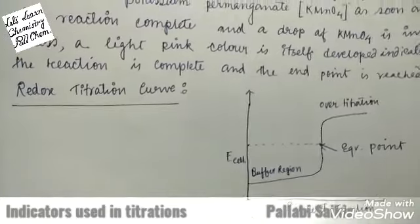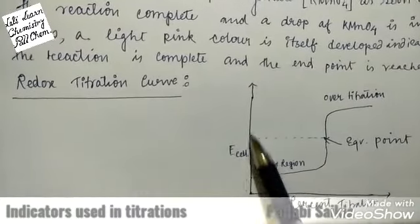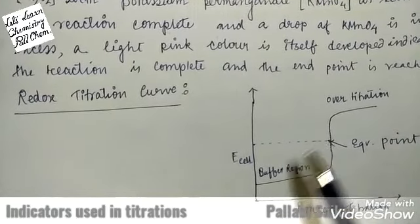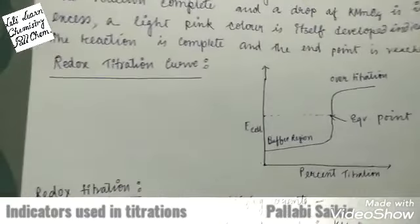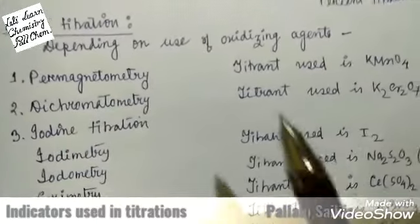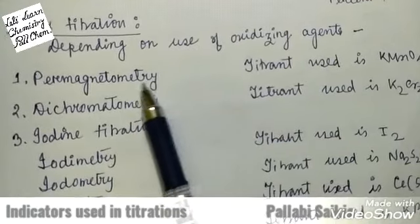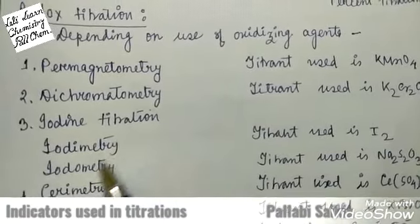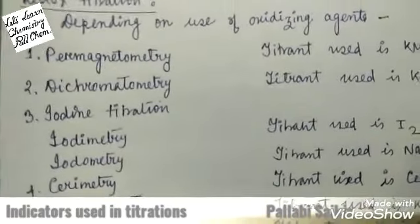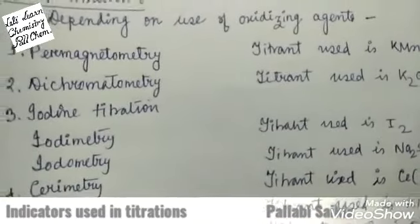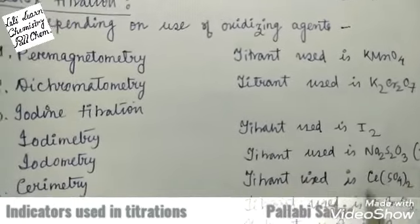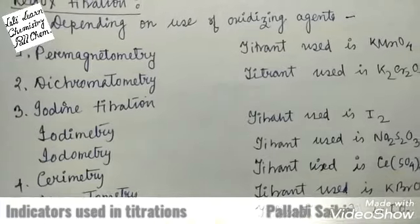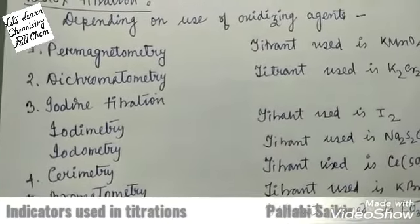This is the redox titration curve where percent titration is plotted against the cell potential (E cell), showing a sharp increase at the equivalence point. There are different types of redox titration depending on the oxidizing agent: permanganatometry uses potassium permanganate; dichromatometry uses potassium dichromate; iodimetry uses direct iodine; iodometry uses sodium thiosulfate where iodine is liberated; cerimetry uses cerium sulfate; bromatometry uses potassium bromate; and iodatometry uses iodate.